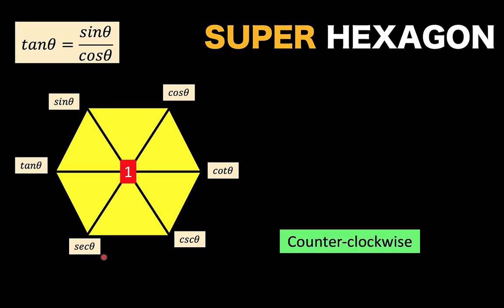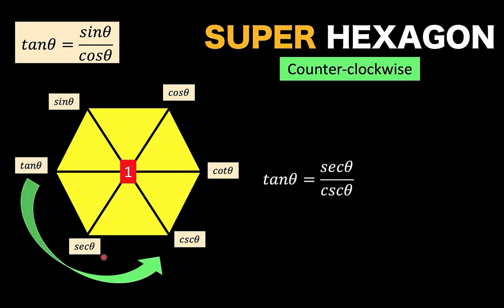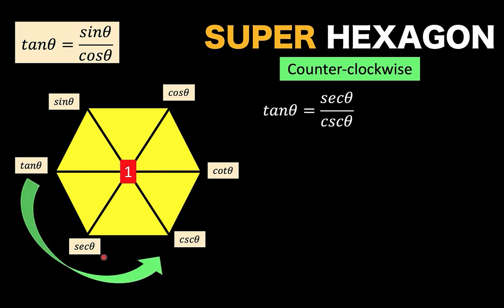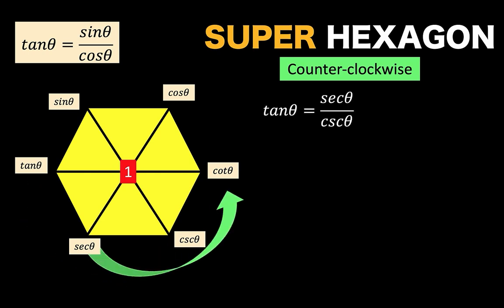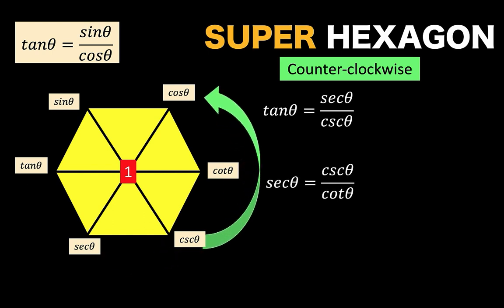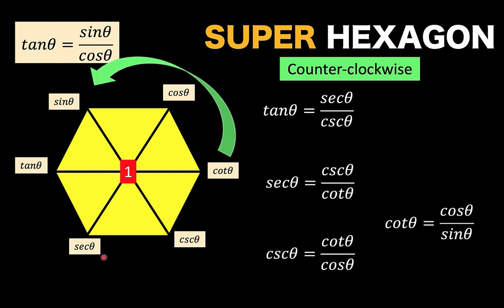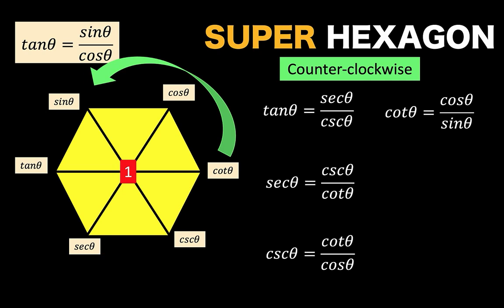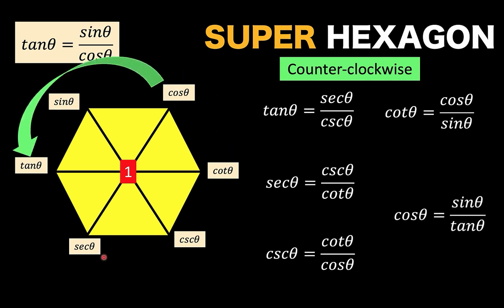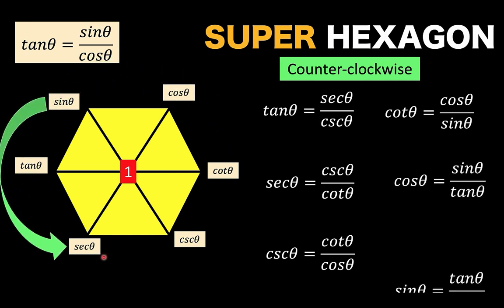Next, if we move in the counterclockwise direction, we still follow the same pattern. Tangent equals secant over cosecant. Secant equals cosecant over cotangent. Following the same process generates another six trigonometric identities by moving the arrow counterclockwise.